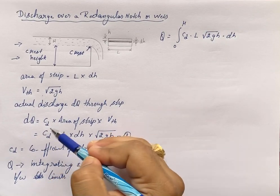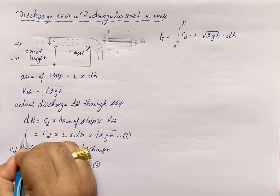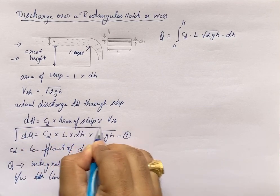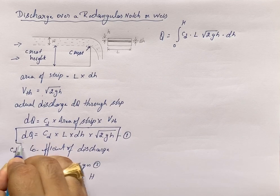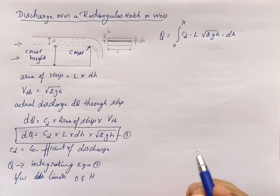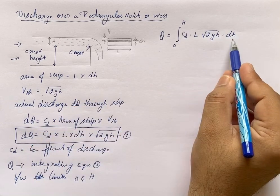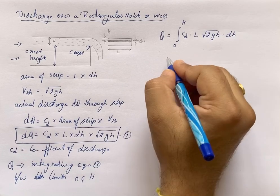I have taken this dQ equation and integrated it between the limits 0 and H. The integration of dQ becomes Q, and this integration is between the limits for height H.